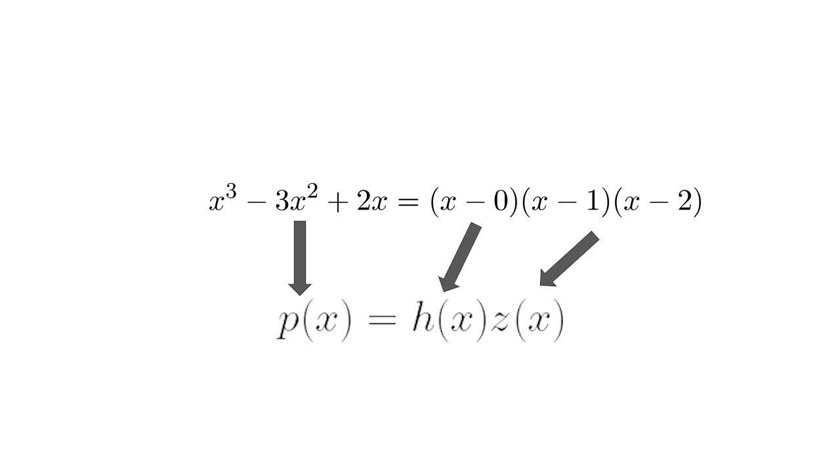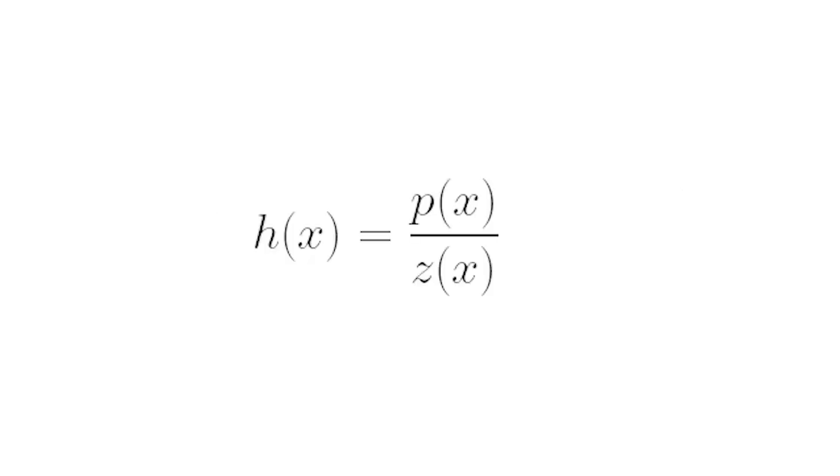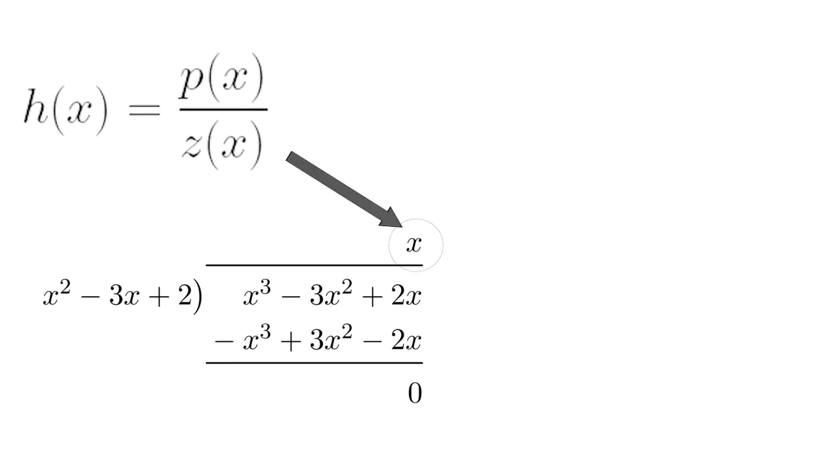The reason the prover can only make known two of the roots is because with all three roots, a verifier could simply multiply them together in order to recreate the original polynomial. A way the prover can show h(x) is through division of the polynomial and target polynomial. When multiplied out, this is shown here, and it renders x as a result, which is indeed the third root.